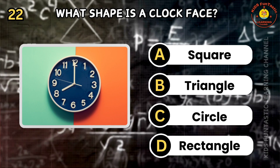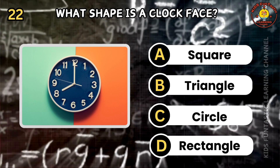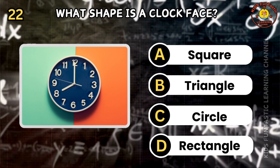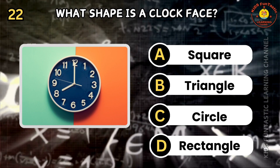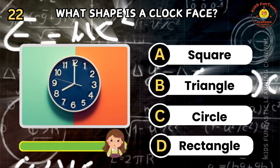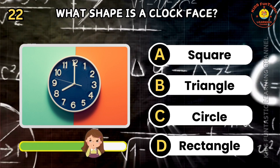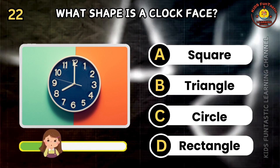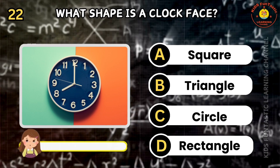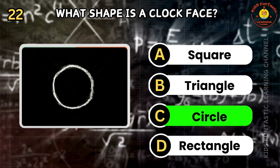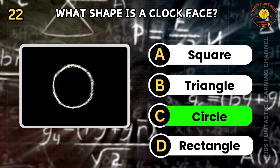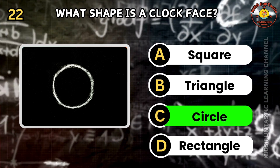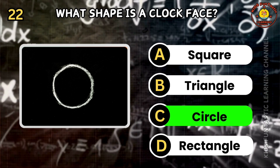Question 22. What shape is a clock face? A: square, B: triangle, C: circle, D: rectangle. You're so smart! The correct answer is C. A clock face is typically a circle.